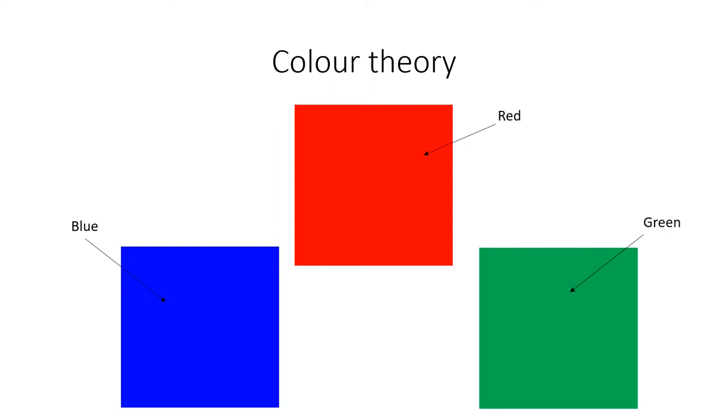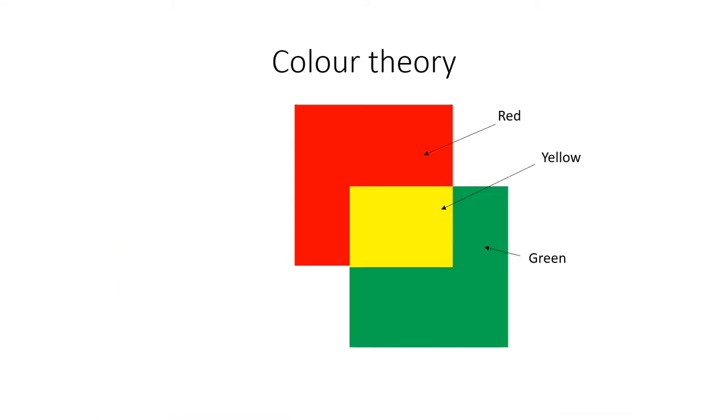To create the colors of the spectrum, it's possible to combine different amounts of red, green and blue at different intensities. This slide shows three blocks of light: red, blue and green. If we add red light to green, we create yellow.